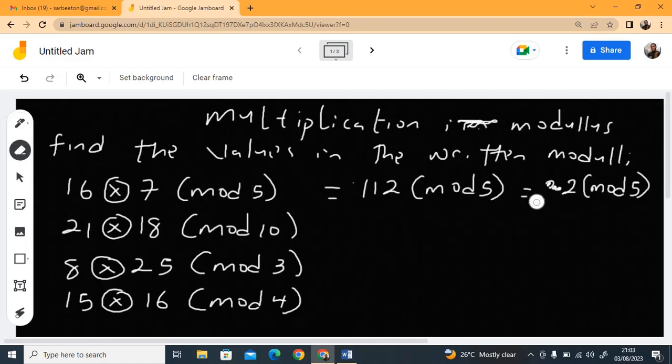Let's move on. The next one is 21 times 18 in mod 10. 21 times 18, when you multiply, you get 378. So 378 mod 10. 378 divided by 10 should give us 37. So what should be the remainder? Because 37 times 10 is 370, remain 8. So when you have 370 plus 8, you get 378. So this is 8 mod 10.